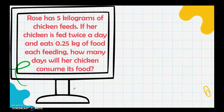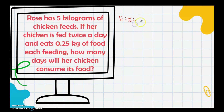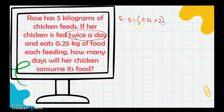Rose has 5 kilograms of chicken feed. Her chicken is fed twice a day and eats 0.25 kilograms each feeding. How many days will her chicken consume all the food? We will divide. Since the chicken eats 0.25 kg per feeding and is fed twice a day, we first multiply 0.25 × 2.